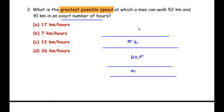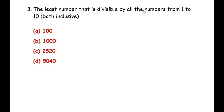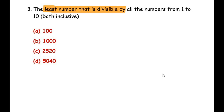The next question: The least number that is divisible by all the numbers from 1 to 10, both inclusive — what do we have to find, LCM or HCF? The keyword is 'least number that is divisible by.' It has to be a bigger number which can be divided by 1, 2, 3, up to 10. Since we are talking about a larger number which can be divided by smaller numbers, we are talking about the LCM of the given numbers.